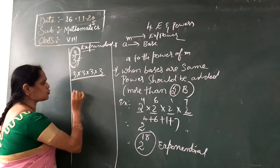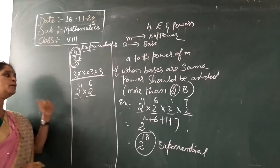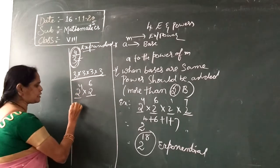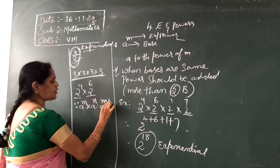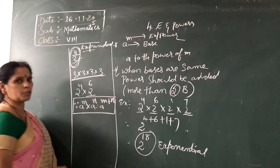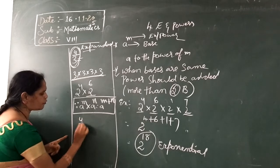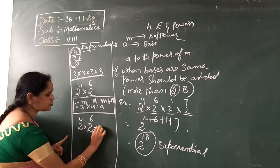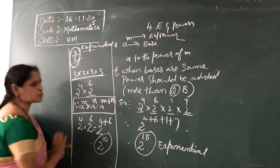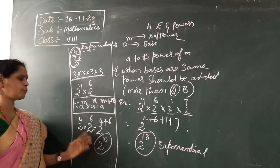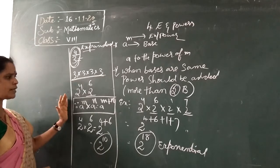When only two bases are the same, use the formula: A to the power of M into A to the power of N is equal to A to the power of M plus N. For example, two to the power of four into two to the power of six equals two to the power of four plus six, which is two to the power of ten. In expanded form, two would be written ten times.